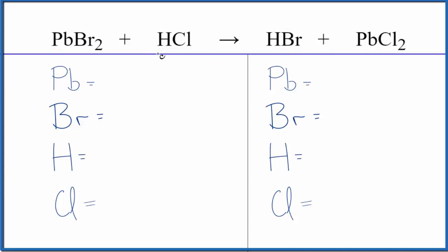Let's balance the equation. We have one lead, two bromines, one hydrogen, and one chlorine atom. On the product side, we have one lead, one bromine, one hydrogen, and two chlorine atoms.